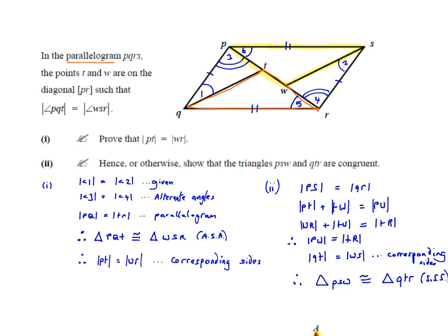By proving these two triangles are congruent, we can say that the corresponding sides must be equal — PT corresponds to WR, so they must be equal in length. Now let's look at part two: prove that triangles PSW and QTR are congruent. PSW would be this triangle here, P to S to W, and QTR would be this triangle here.